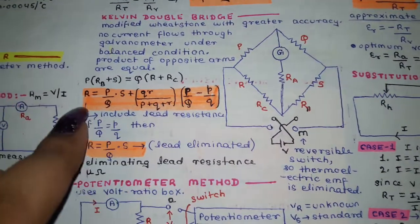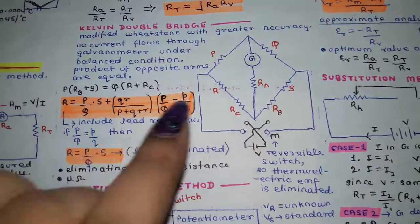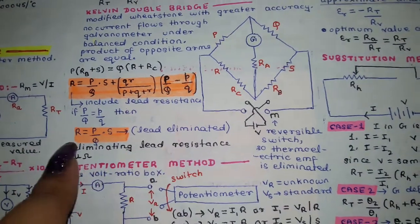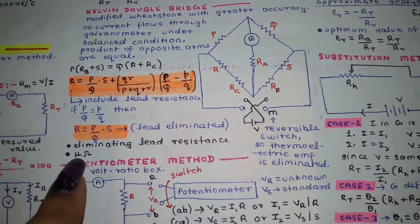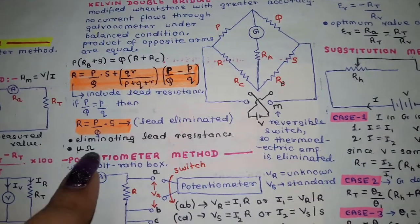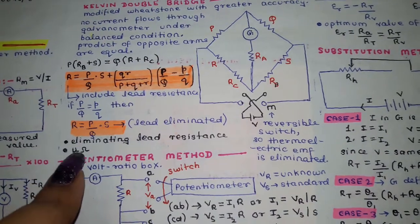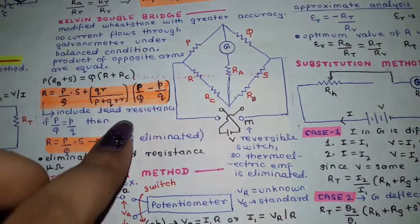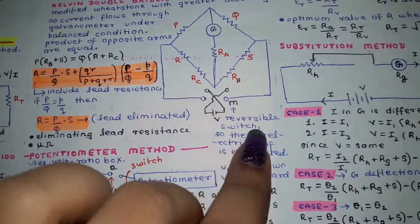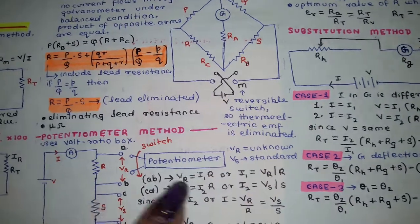The Kelvin double bridge formula includes lead resistance, but the method has the benefit of being able to eliminate lead resistance. It can also measure in micro-amperes, making it very accurate. A reversible switch is included so that thermoelectric EMF is eliminated.